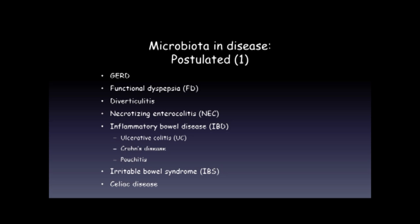Not a day goes by without another claim that the microbiome has been critical in some disease state, such as reflux disease, functional dyspepsia, diverticulitis, necrotizing enterocolitis in infants, inflammatory bowel disease, ulcerative colitis, Crohn's disease, pouchitis, irritable bowel syndrome, and even celiac disease. There is evidence in many of these disease states to support some role for the microbiome, but have we actually defined a causative role? Usually, probably not.